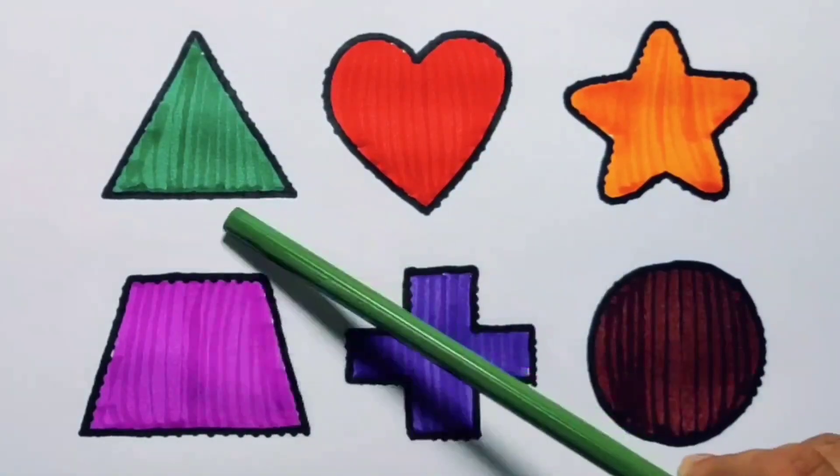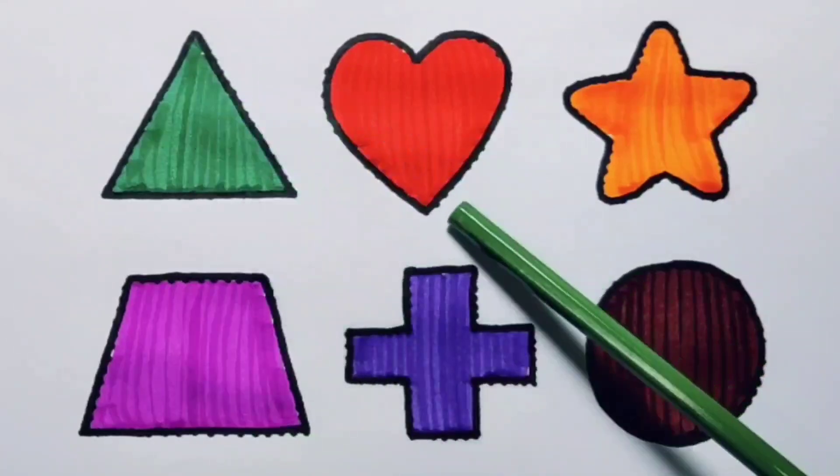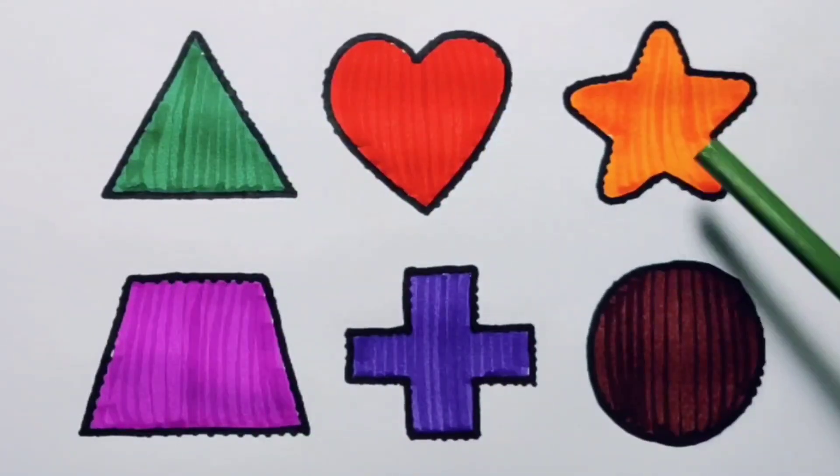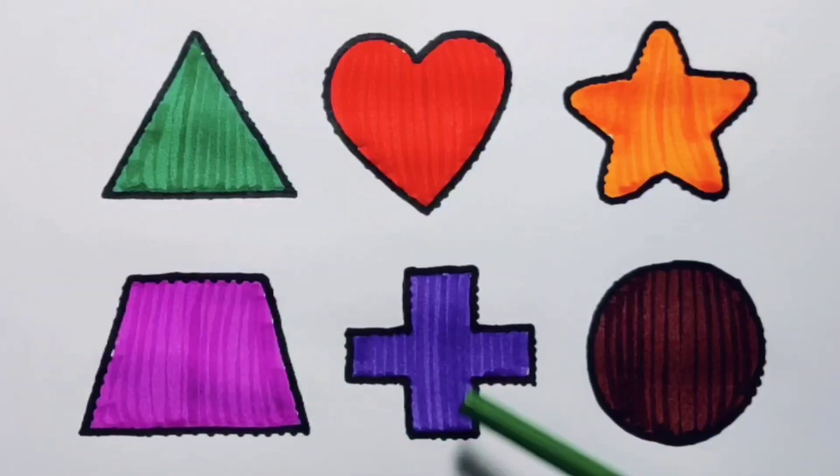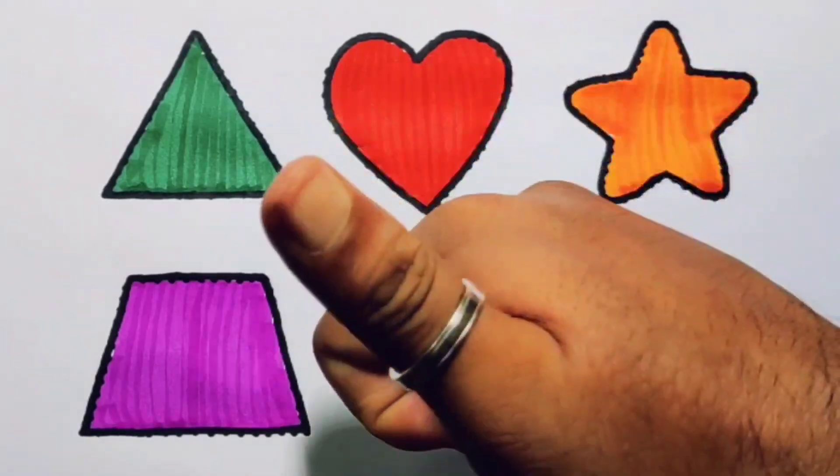What we learned: we learned green color triangle, red color heart, orange color star, pink color trapezium, purple color cross, chocolate color circle. Thank you for watching my video.